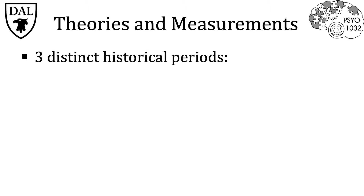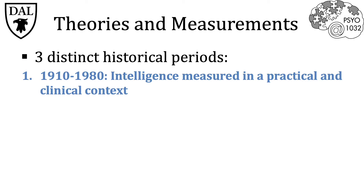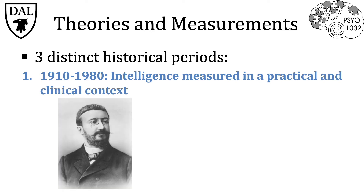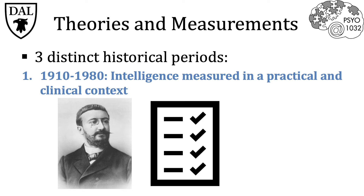However, it wasn't until the early 1900s that intelligence was first measured in a practical and clinical context. The first practical test was devised by French psychologist Alfred Binet, consisting of 30 problems of increasing difficulty, where the score was determined by the patient's mental age divided by the chronological age multiplied by 100, giving a score referred to as the intelligence quotient, or IQ.